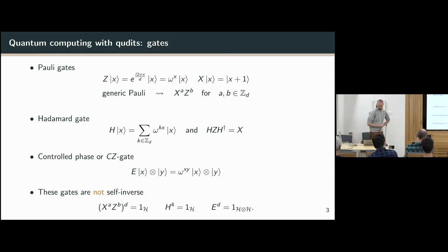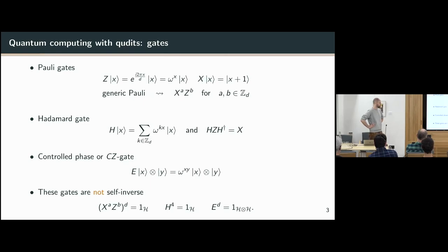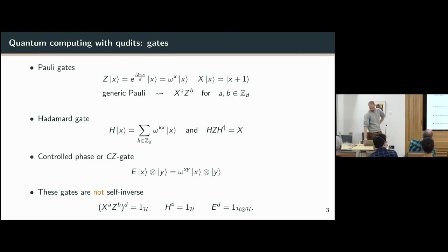A key difference from the qubit case is that none of these gates are self-inverse. The main point is not the specifics of each operator but rather that we can generalize many building blocks of MBQC from the qubit setting into the qudit setting, at least when the dimension is prime. Many MBQC constructions should carry forward without problem, though there are a handful of differences that make reasoning about these things a little more involved.